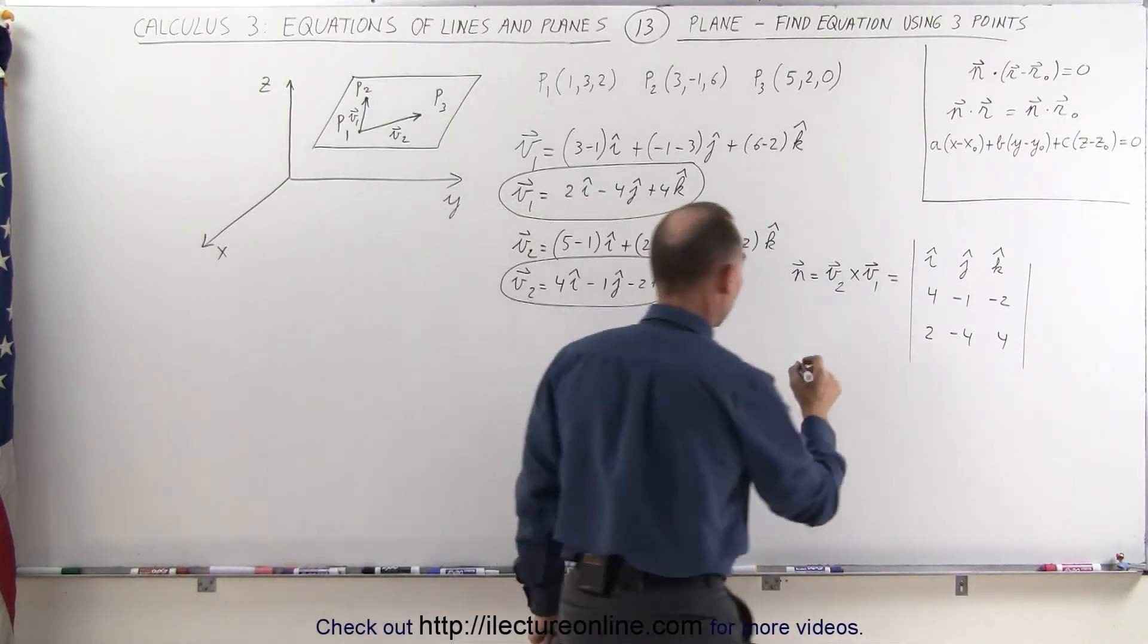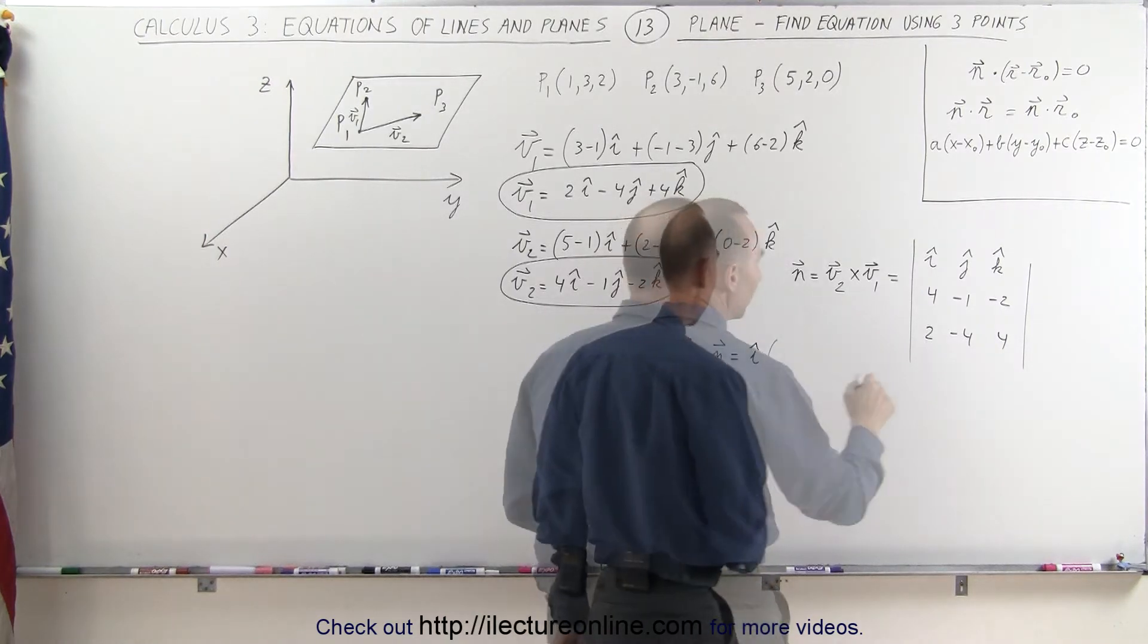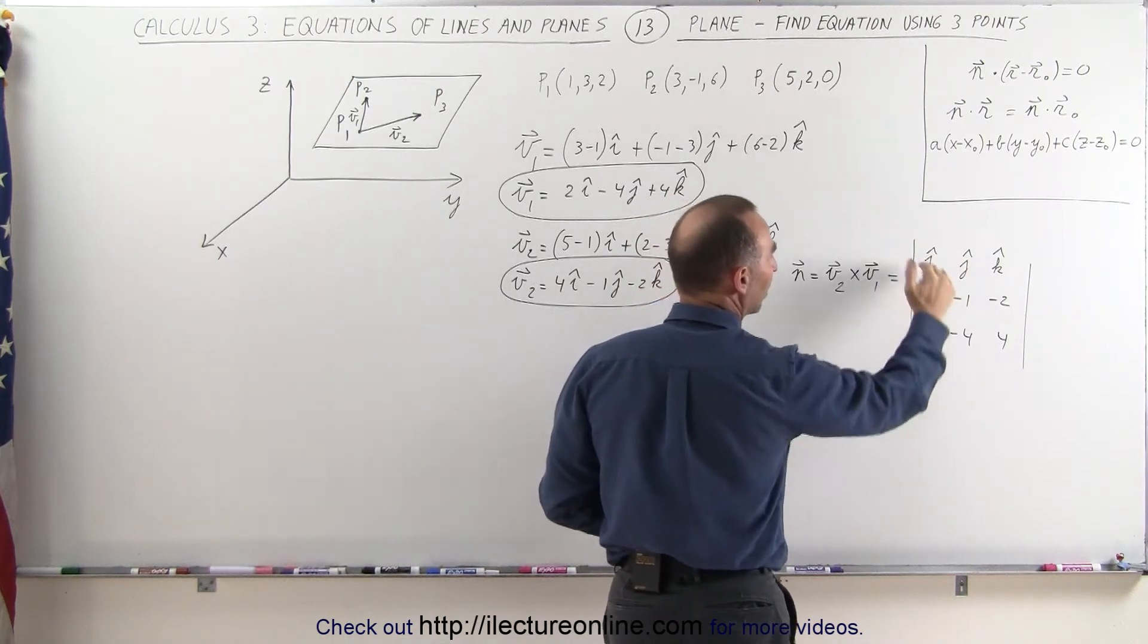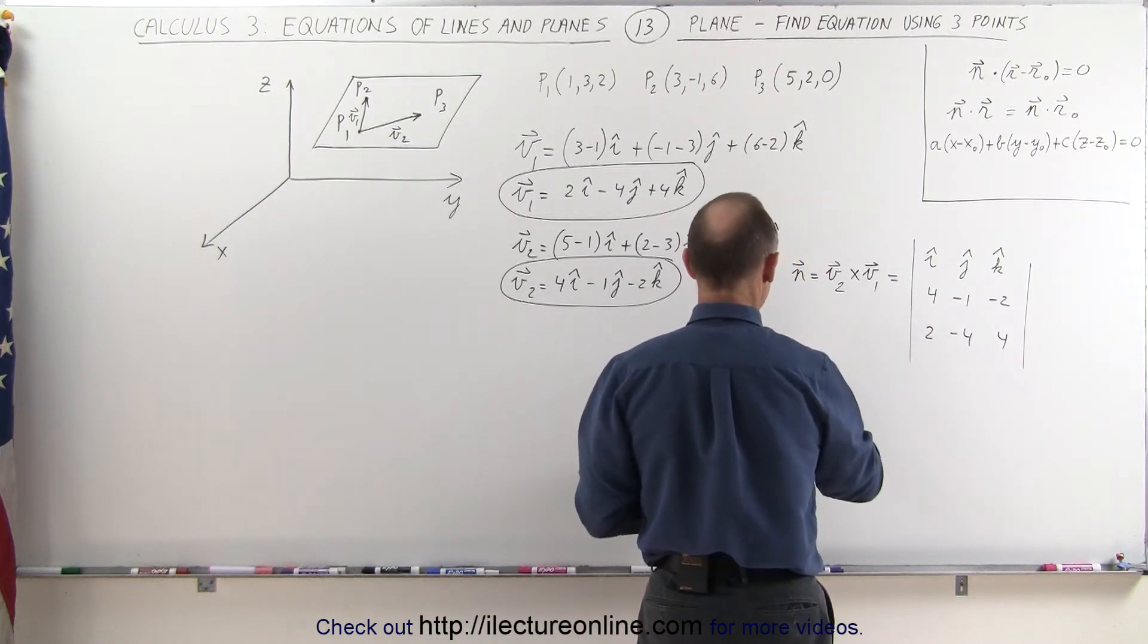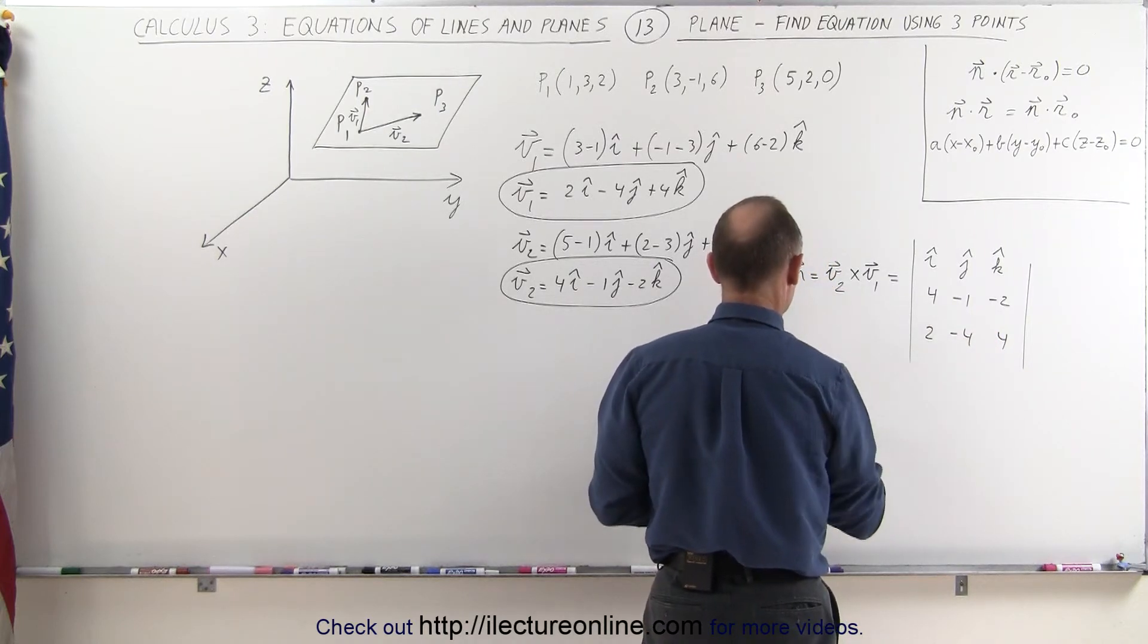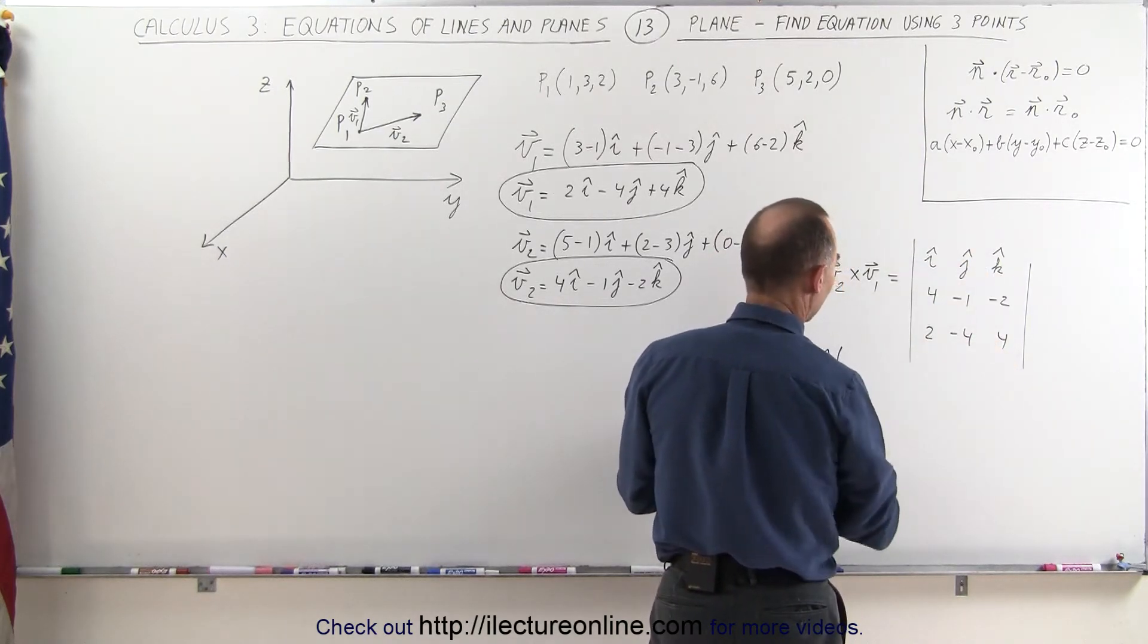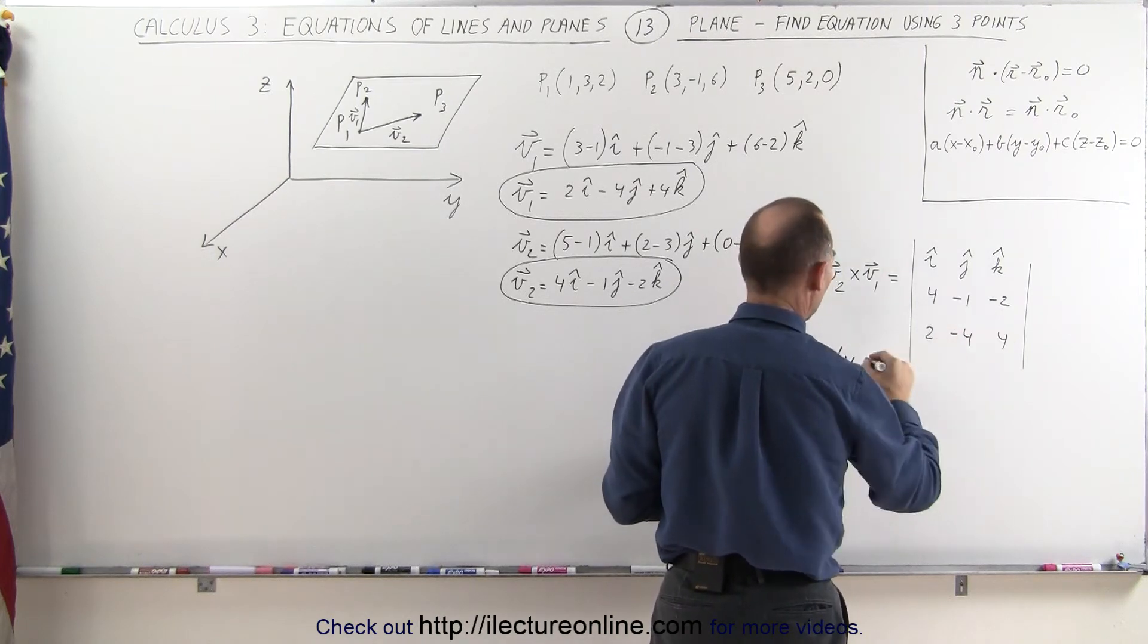Now solving that, I get the following. So my normal vector is equal to i - I want the i component, so I cross out this column and that row, and I end up with those four elements. So it's minus 1 times 4, that would be minus 4, minus 2 times 4, which is 8, minus 8. And now we get minus the j component times - now we get rid of this column and this row - we get 4 times 4, which is 16, minus a minus 4, that would be plus 4.